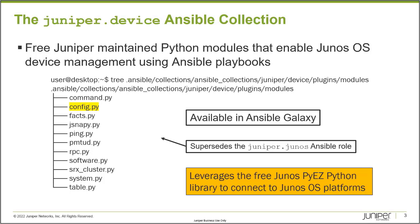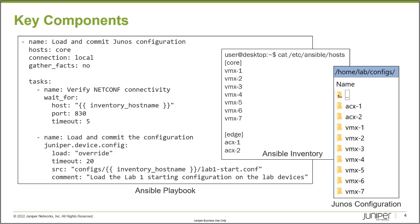We're going to use the config Python library. There are three key components you're going to use to deploy configuration to your Junos devices using Ansible. The first one is the Ansible playbook itself. In the one I use, there is one play. You can name the play whatever you like — this is where we start tying the different components together. You will identify the hosts that you would like the tasks in this playbook to be run against.